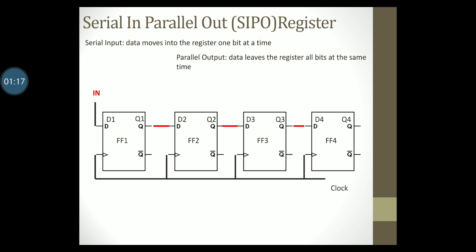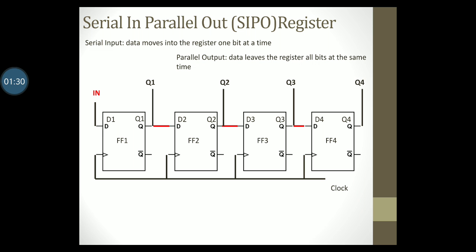To get parallel output we will read the output of each individual flip-flop starting at Q1, Q2, Q3 and Q4. So this is a very simple diagram to indicate a serial in parallel out shift register.